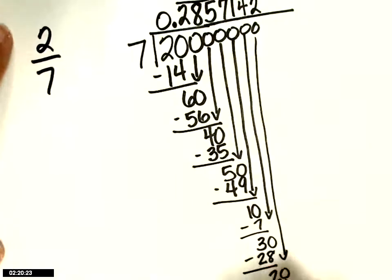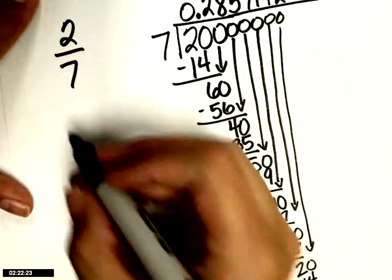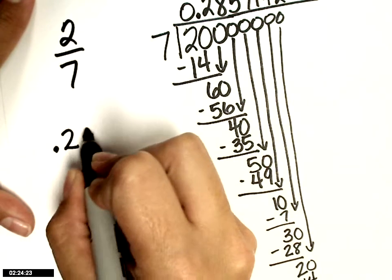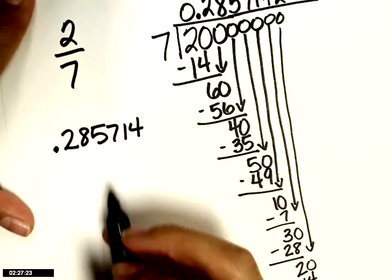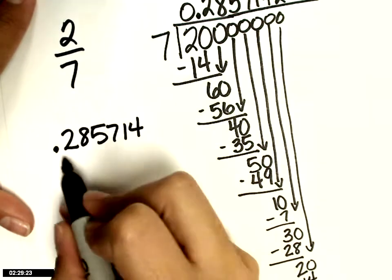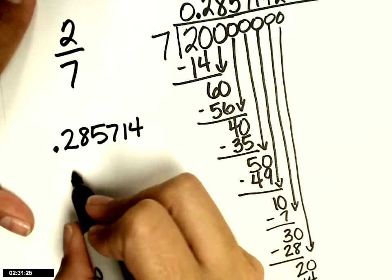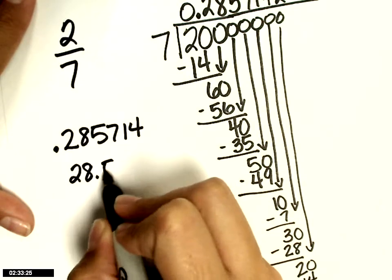For the sake of our assignment today, we're going to take 0.285714. Change that into a percentage by moving my decimal twice to the right. That's 28.5714.